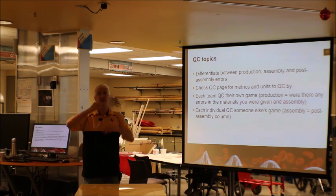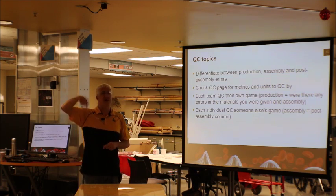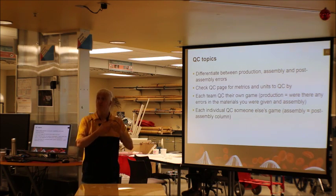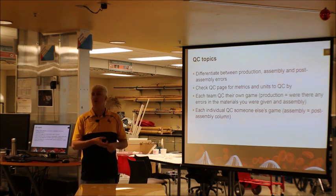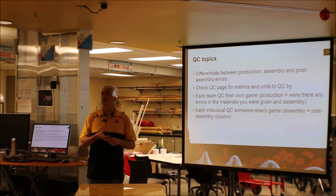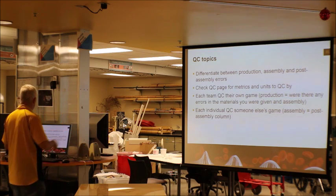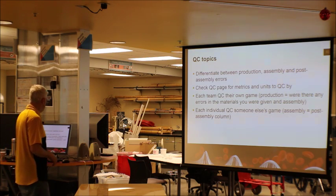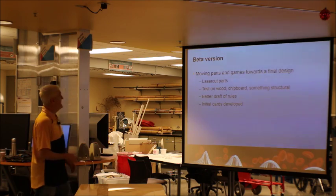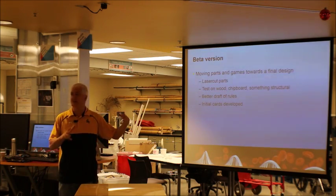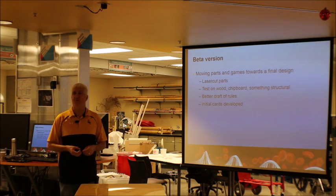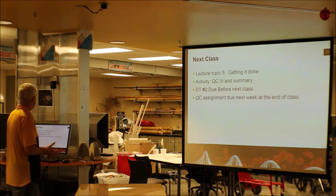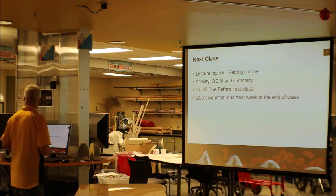For quality control: if we gave you a bad part, that goes down as a quality control issue on our end. If you put it together wrong, quality control yourself and mark it down. When you quality control someone else's game, you're looking for stuff they did wrong or we did wrong, and we'll track all of that. As you move towards the beta version of your own game, start thinking about all the pieces and parts — what do you need to do, what do you need to learn? Next week it'll be getting it all done and quality controlling using this tool.